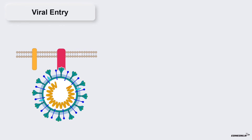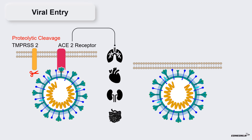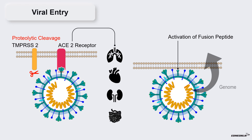The first step during viral entry into host cells involves binding of the spike protein to ACE2 receptors, which are mainly expressed in the lungs, heart, kidneys, and intestines. Binding of spike protein to ACE2 is important but not sufficient for viral entry, which requires an additional proteolytic cleavage event brought about by host cell proteases, including transmembrane protease serine 2, abbreviated as TMPRSS2. As a result, the receptor binding domain of the spike protein is separated from the fusion domain, activating the fusion peptide present in the center of the fusion domain. This allows the virus membrane to fuse with the cellular plasma membrane, and once fusion has occurred, the viral genome is introduced into the host cell.